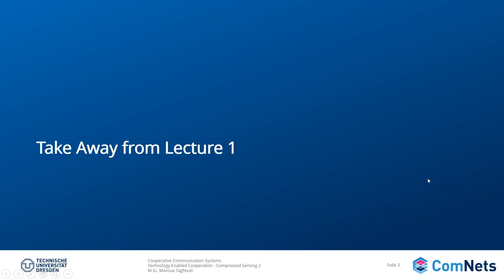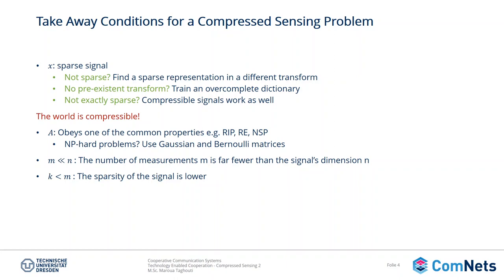I would like to start with the takeaway from lecture one. Remember, in the previous lecture, we talked about how to formulate a compressed sensing problem. For that, we need a sparse signal X that we are going to project randomly over a sensing or measurement matrix A to obtain a very small signal Y, where the dimension of Y is small compared to X. The first thing to remember is that it has to be a sparse signal. If you don't have a sparse signal, there is no problem — you just need to find a sparse representation in a different transform, such as DCT or a Fourier transform.